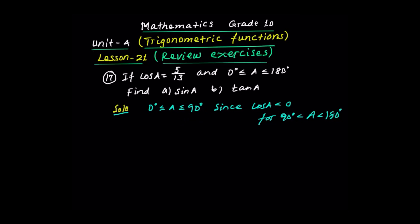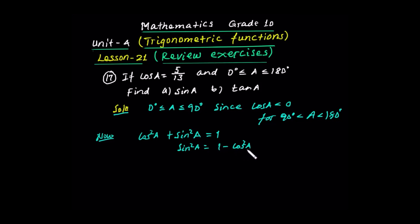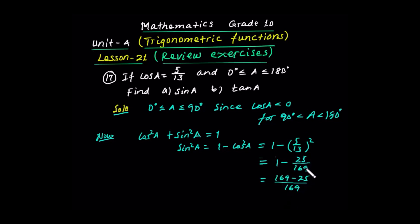Using the Pythagorean identity: cos squared x plus sine squared x equals 1. So cos squared a plus sine squared a equals 1. Therefore sin squared a equals 1 minus cos squared a. Substituting, sin squared a equals 1 minus (5 over 13) squared, which gives 1 minus 25 over 169, and then 169 minus 25 over 169.